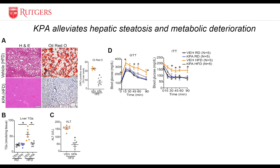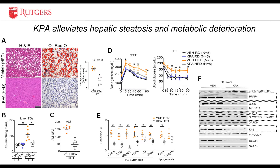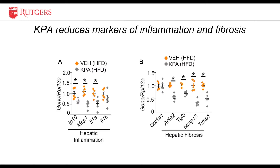We found that kispeptin analog treatment decreased levels of genes involved in triglyceride synthesis and lipogenesis. Similar observations were made at the protein level, with significant decreases in PPARγ, MOGAT, the fat transporter CD36, glycerol kinase, and FAS. Kispeptin analog treatment also caused a reduction in markers of inflammation and fibrosis.